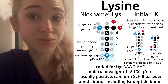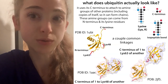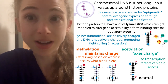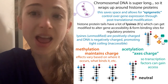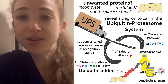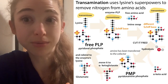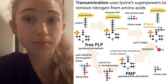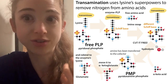Basically, it allows you to modify proteins, such as adding ubiquitin tags, methylation, or acetylation. This can regulate gene expression through epigenetics, as well as tag proteins for degradation. It can also serve key enzymatic roles, such as helping aminotransferases remove amino groups from other amino acids to safely remove their nitrogen.